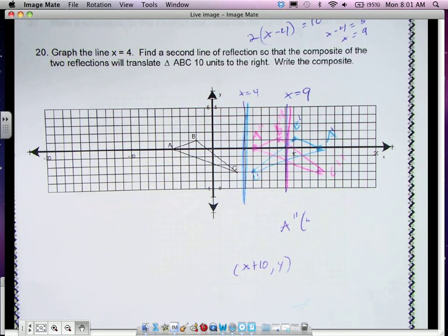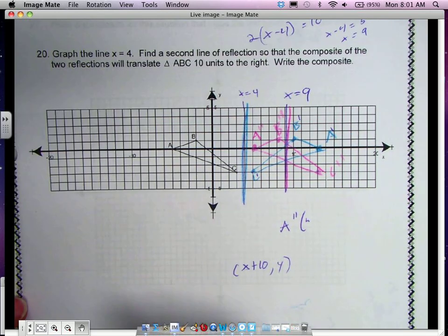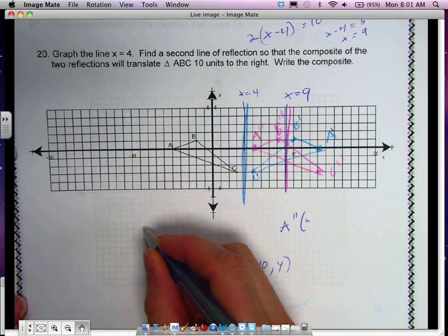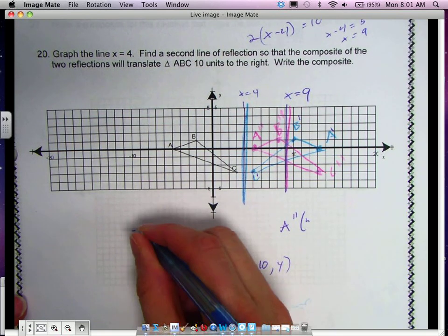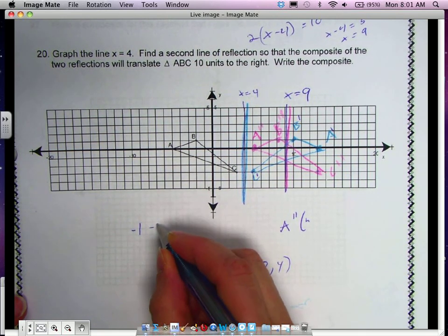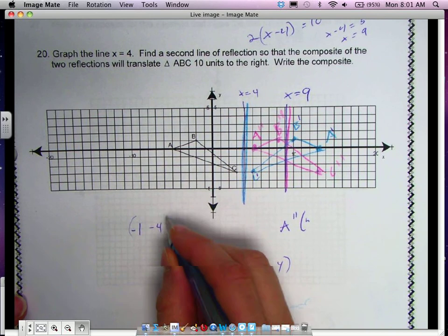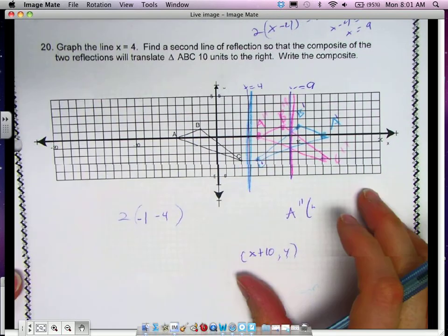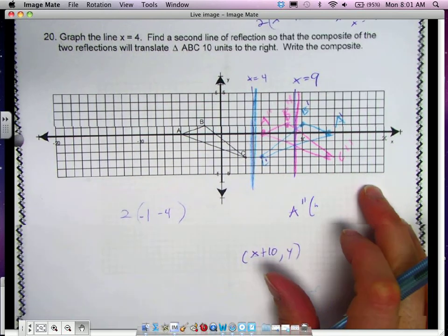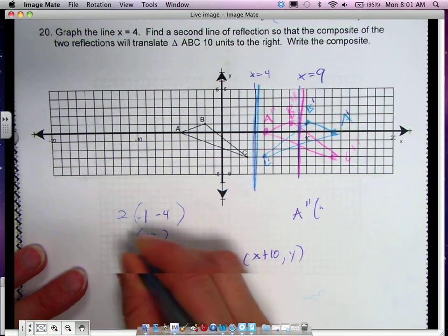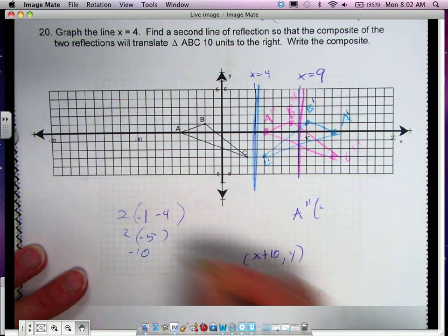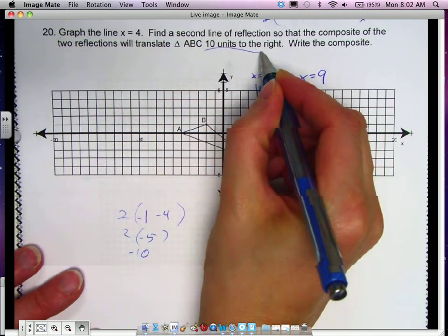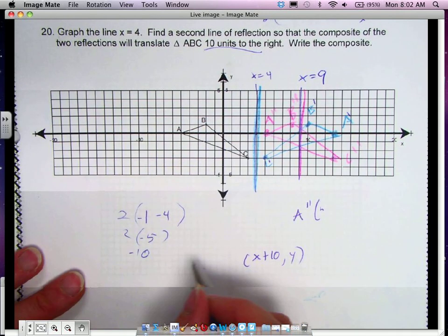Okay. So let's see if it works in our formula. Negative 1 and 4. So we take the second, which is negative 1 minus 4, and we times it by 2. So we get negative 5 times 2, which gives me negative 10. The only problem with it is we have to do 10 units to the right, and this will be 10 units to the left.